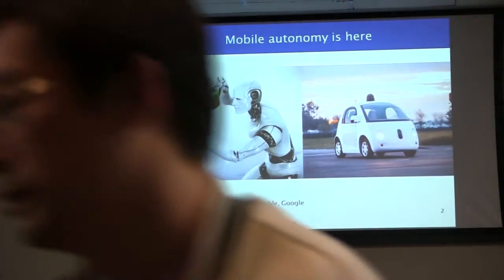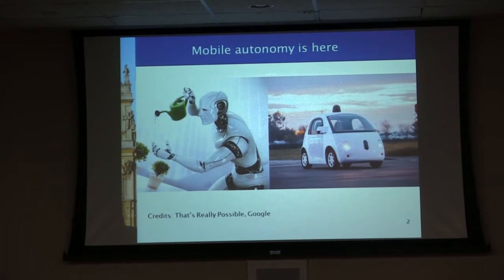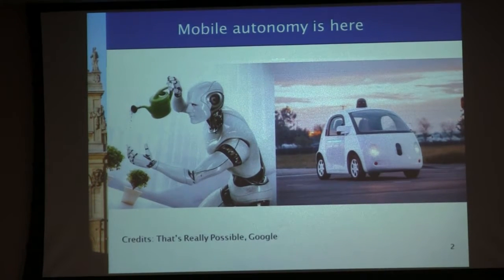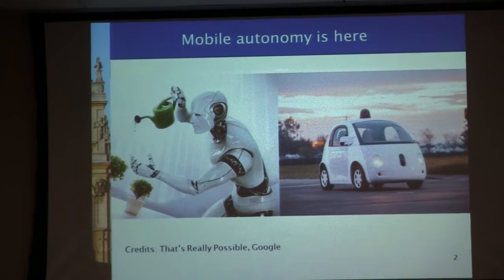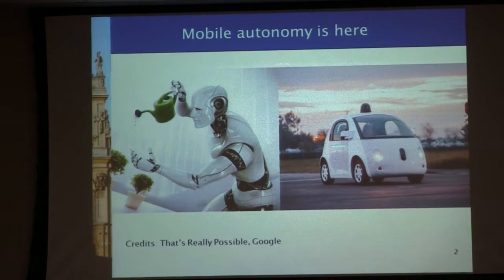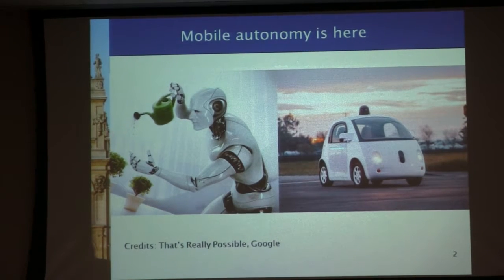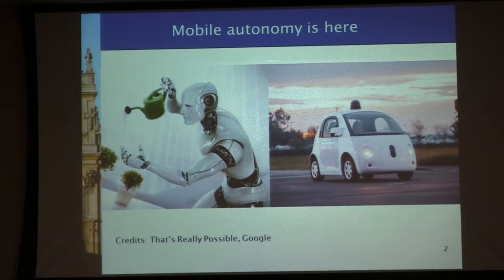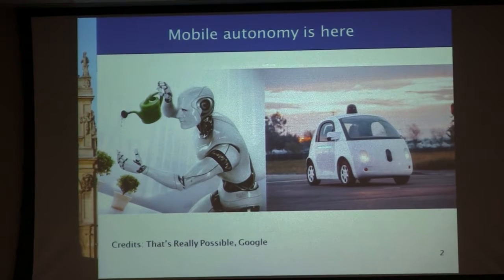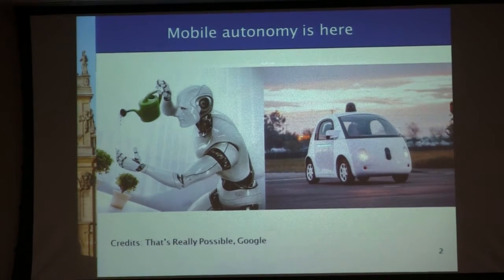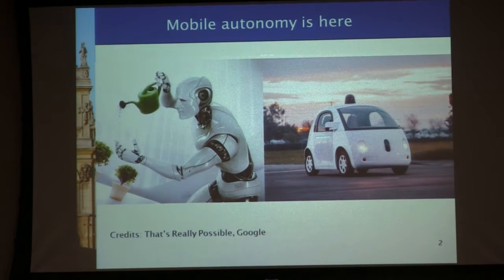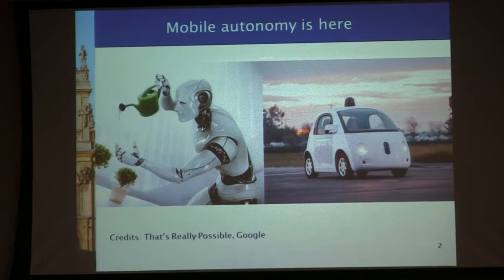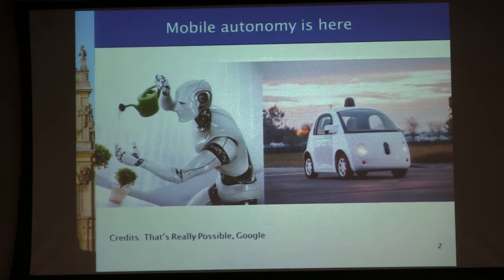I wanted to begin by making a statement that should not surprise you: mobile autonomy is here. The vision of robots, robotic assistants that are going to do everything for us — this vision has been realised. People in various countries are already letting these robotic assistants into their homes. And the Google car, according to Wendy Drew from Stanford, is the vanguard of mobile robotics — this is a mobile robot driving around in California right now.